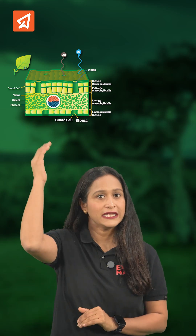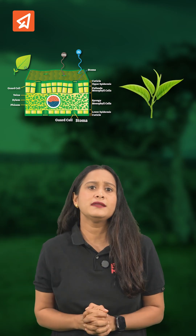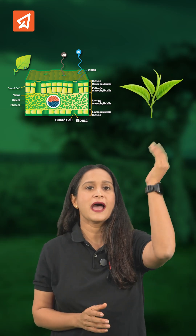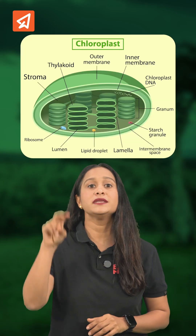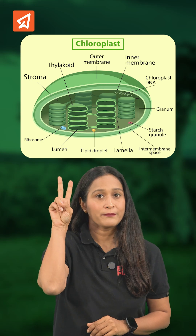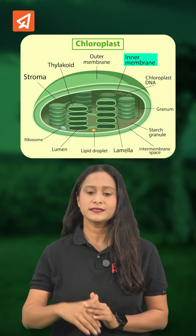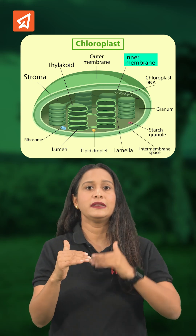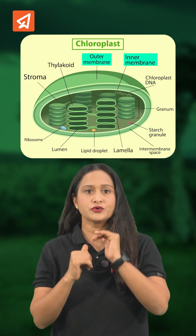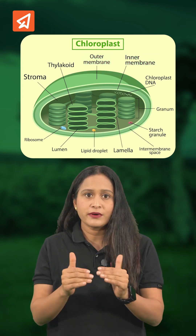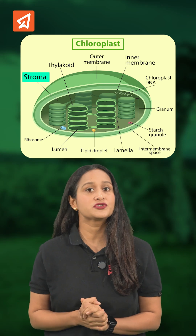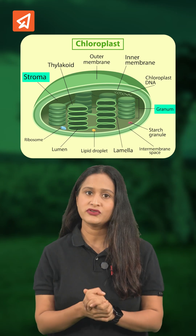Chloroplasts are found in the photosynthetic mesophyll cells of the leaf and green stems of the plant. It is surrounded by a double-layered membrane — that is, the inner membrane and the outer membrane. Inside the membrane, it contains stroma and the grana.